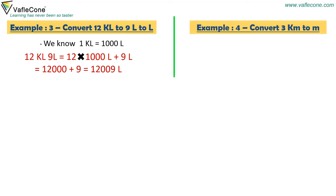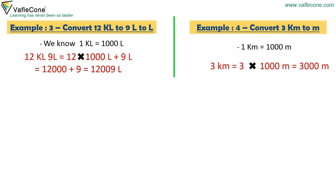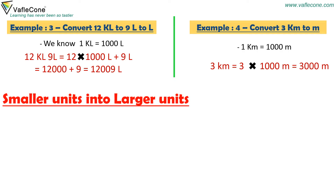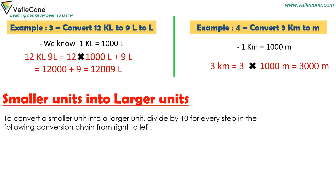Example 4. Convert 3 kilolitres to litres. 1 kilolitre is equal to 1000 litres. So 3 kilolitres is equal to 3 × 1000 litres, which equals 3000 litres.